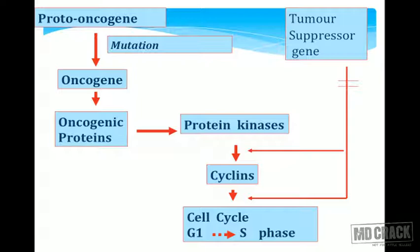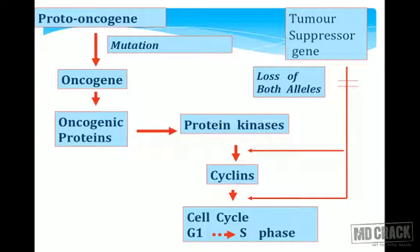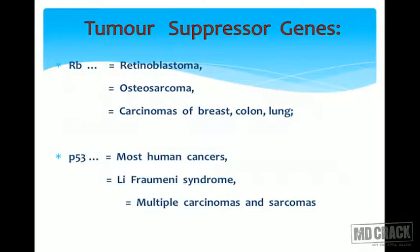But if tumor suppressor genes themselves are defective, they will not sense these entities. Loss of both alleles of tumor suppressor genes makes the oncoproteins act on the cells and progress the cell from one phase to the other. Let us have a look at some examples of tumor suppressor genes — the two most important being the retinoblastoma gene and p53.